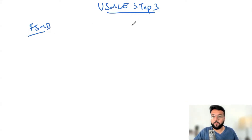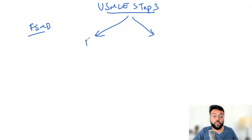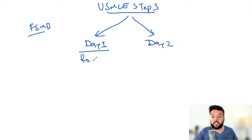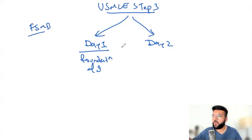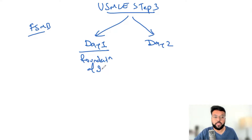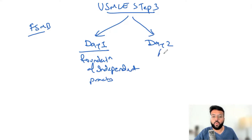The USMLE Step 3 exam is divided into two days: Day 1 and Day 2. Day 1 is called Foundation of Independent Practice, and it will give you a feel of Step 1 and Step 2 examinations — more of a Step 1 feel. You'll see basic questions like the mechanism of action of a drug; for example, they might ask which target vancomycin acts on, which is cell wall. It's very basic foundational content.